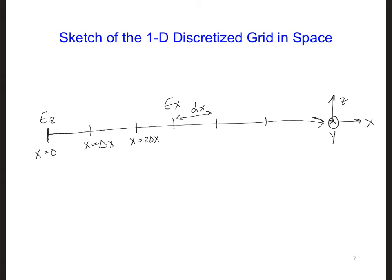So this means for E_z, we should draw an arrow pointing upwards at each of these locations corresponding to the electric field at those locations pointing upwards.